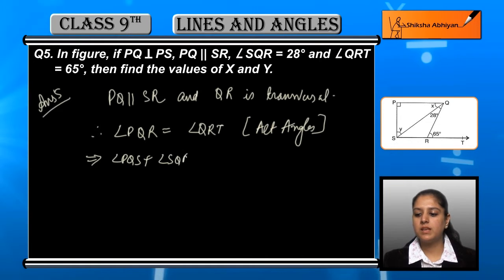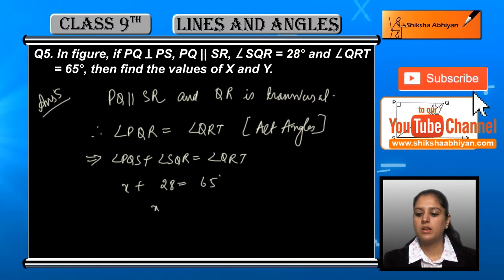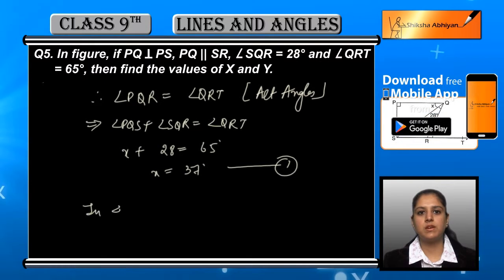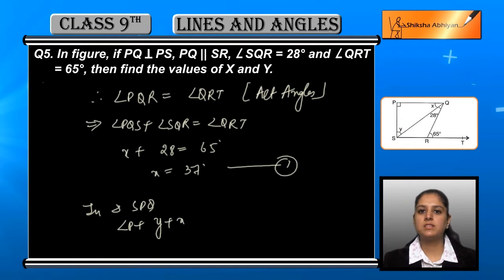Now, angle PQS plus angle SQR is equal to angle QRT. Now, PQS is X and SQR is 28, QRT is 65. So X's value is 37. This is equation number 1. We now have X's value as 37.